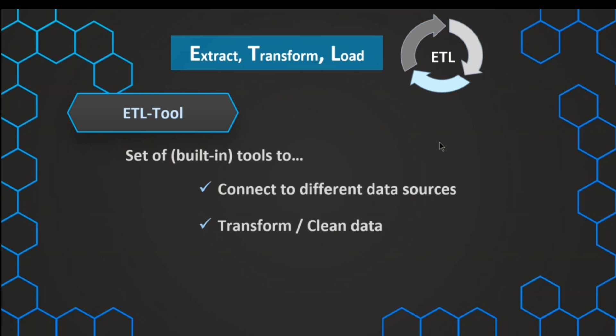We have many built-in tools to transform our data: to change data types, add additional columns, clean our data, and restructure it. This is the main part of our ETL tools and process. Then we have a set of tools to write the data back in different formats — of course, we are interested in writing the data back into databases, our data warehouse. These ETL tools usually have thousands of different possibilities, and we typically use just a small subset.